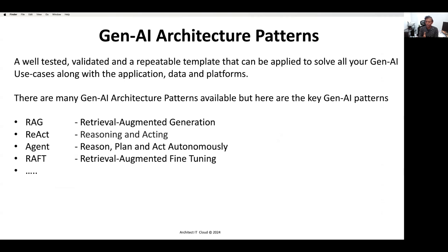Moving on to Generative AI Architecture Patterns. As I explained earlier, a Generative AI Architecture Pattern is also a well-tested, validated, and repeatable template that can be applied to solve generative business use cases or problems. But it involves not only the model, but also the application, data, and platform. Here are the key Generative AI Architecture Patterns available: Retrieval Augmented Generation, Reasoning and Acting, Reason-Plan-Act, Autonomous agents, and Retrieval Augmented Fine-Tuning — and the list will grow. We will add new patterns and create videos as a playlist. Let's move on to understand Retrieval Augmented Generation and how it can be helpful for your organization.